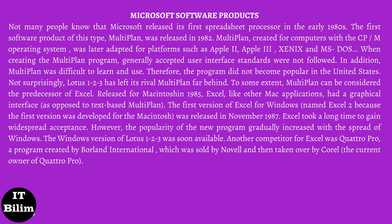Released for Macintosh in 1985, Excel, like other Mac applications, had a graphical interface, as opposed to the text-based Multiplan. The first version of Excel for Windows, named Excel 2 because the first version was developed for the Macintosh, was released in November 1987. Excel took a long time to gain widespread acceptance. However, the popularity of the new program gradually increased with the spread of Windows. The Windows version of Lotus 1-2-3 was soon available. Another competitor for Excel was Quattro Pro, a program created by Borland International, which was sold by Novell and then taken over by Corel, the current owner of Quattro Pro.